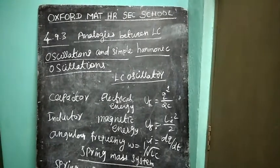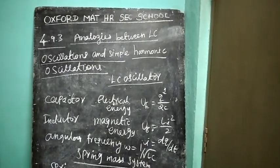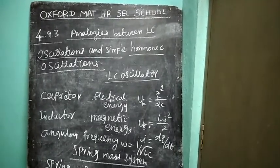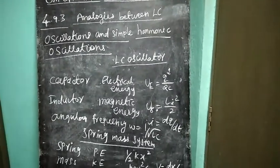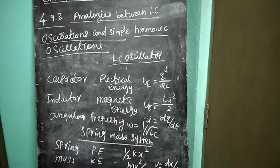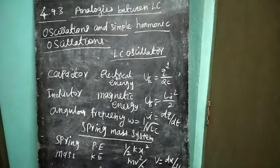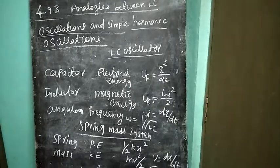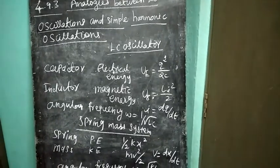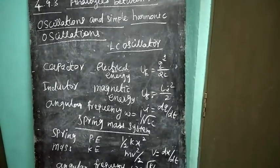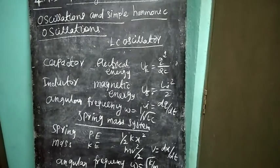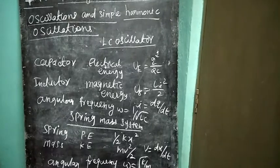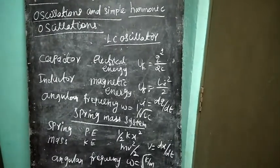The energy of LC oscillations is compared with simple harmonic oscillations in a spring-mass system. In the spring-mass system, mechanical energy exists in two forms: potential energy in the spring, that is half kx squared, and kinetic energy in the mass, equal to half m times v squared, where v is velocity, dx by dt.